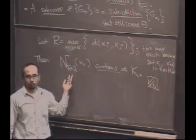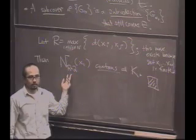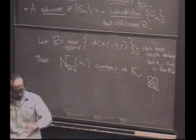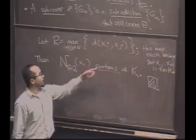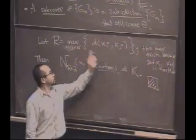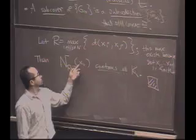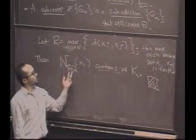What property of metrics is going to become really important in here? Triangle inequality, because you're just bootstrapping from one point to every point in some ball, xj. Distance from x1 to xj is bounded by R, and the other distances are bounded by 2.